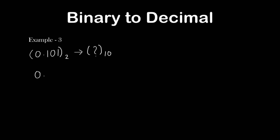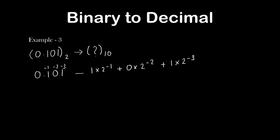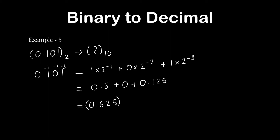I will write down the given binary number. In the case of a fractional number, the position value after the decimal point starts from minus 1 and decreases towards the right end. The remaining process is the same — multiply each digit with 2 to the power of its respective position value. After adding the products, we got the result 0.625, which is the decimal form of the given binary number 0.101.